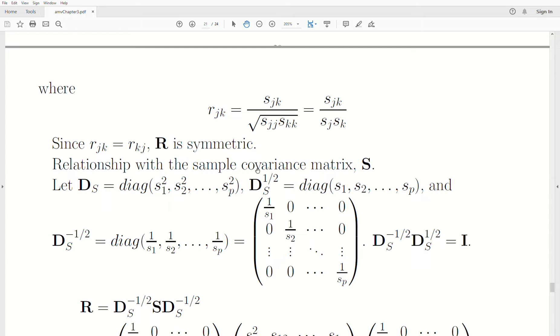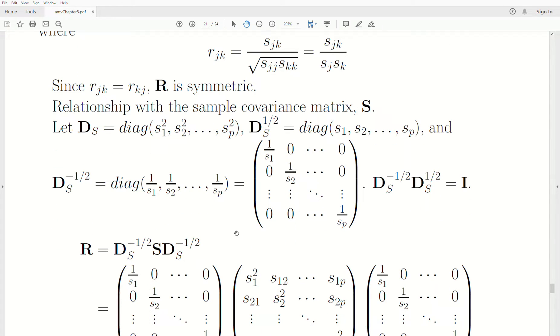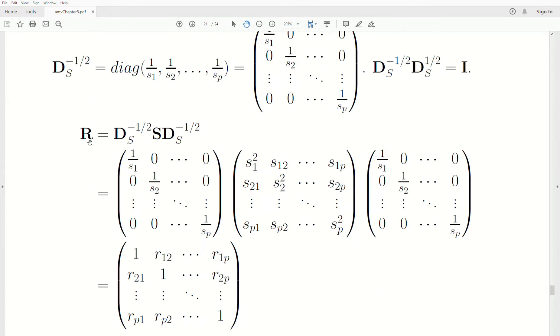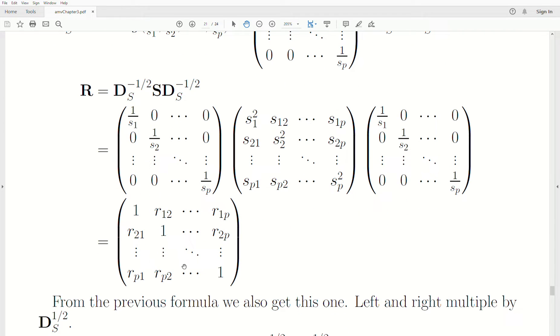Now the relationship with the sample covariance matrix S and the sample correlation matrix is very similar to the population setting. We create a diagonal element D where the sample variances are down the diagonal. We create a square root matrix of it, which is a diagonal matrix with the standard deviations down the diagonal. And then its inverse is just one over S. They are inverses of each other. So R can be thought of as the inverse of the square root matrix times S, which is the sample covariance matrix, times the inverse of the square root matrix. When you do this matrix product, it creates these sample correlations.